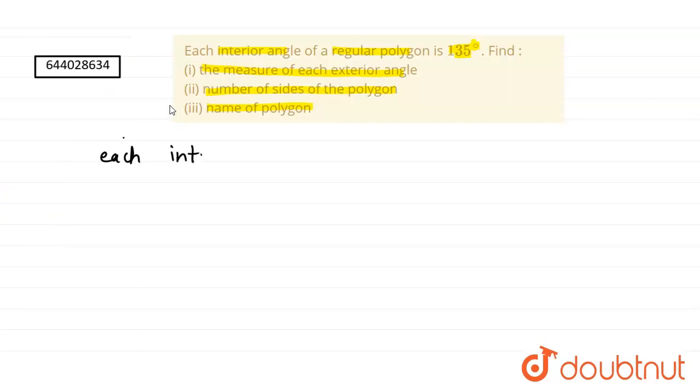Each interior angle equals 135 degrees. We know the formula of each interior angle of a regular polygon is (n-2) × 180 divided by n equals 135. This is the formula of each interior angle of a regular polygon where n is the number of sides.